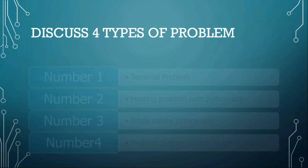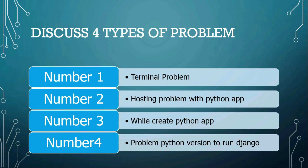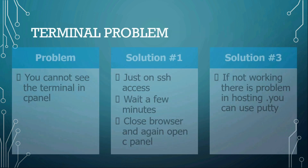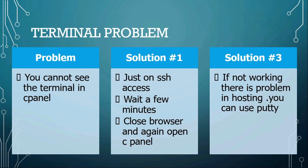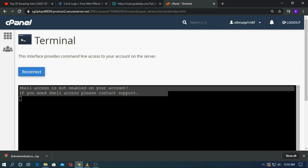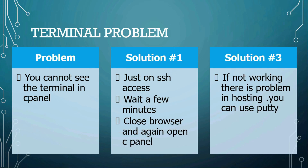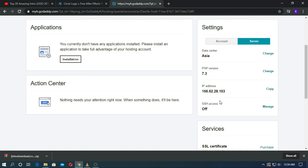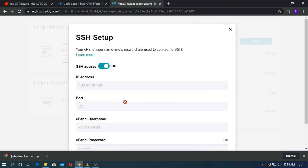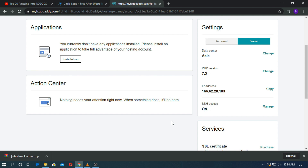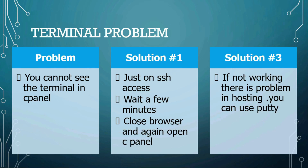First terminal problem: if you cannot see the terminal on your cPanel, just enable the SSH access. Wait for a few minutes and open cPanel again. If it doesn't work, then use PuTTY, but it will work 90% for sure.